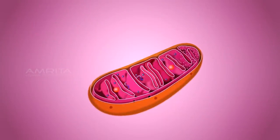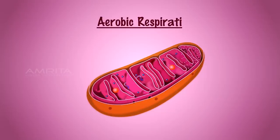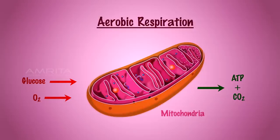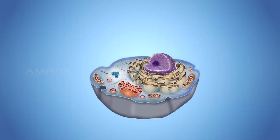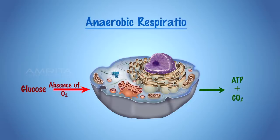Respiration that requires oxygen is called aerobic respiration. Aerobic respiration takes place inside the mitochondria. The respiration that does not require molecular oxygen is called anaerobic respiration. This process occurs in the cytoplasm of the cells.